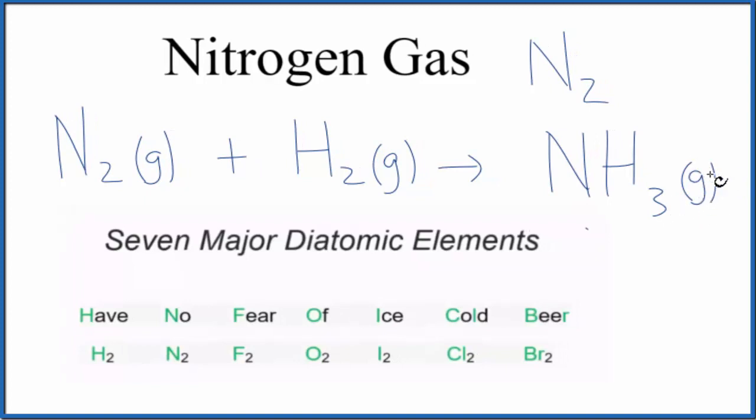We should probably balance this equation. We have two nitrogens and just one here. If we put a two here, two times three, six hydrogens. We could put a three there. So now it's balanced.